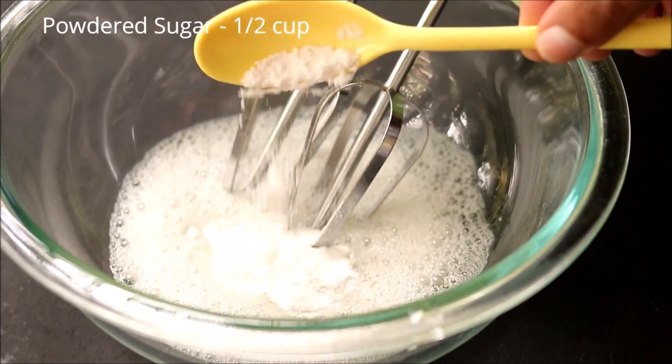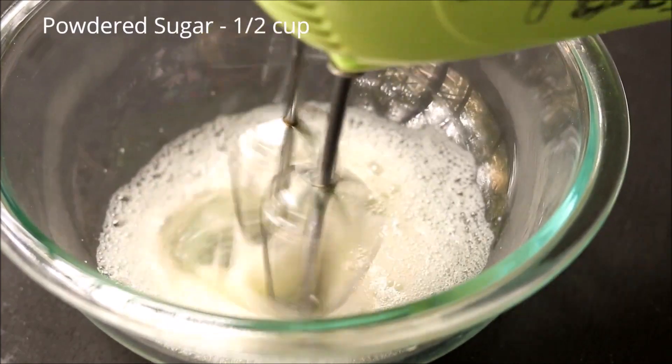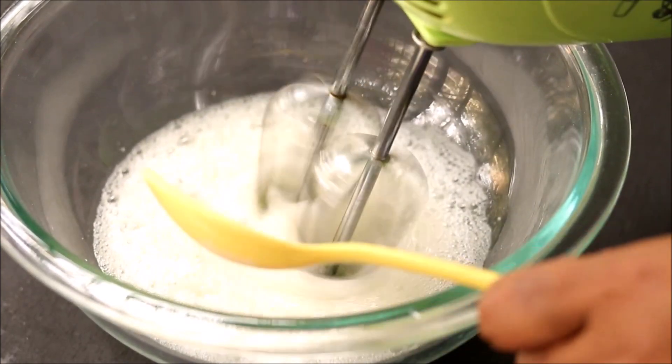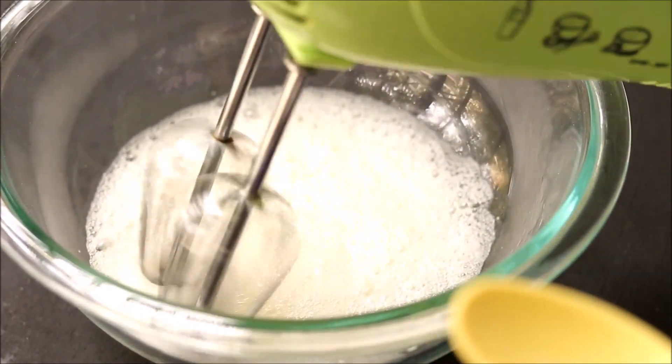Once it turns frothy, start adding powdered sugar. Add only one tablespoon at a time.